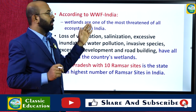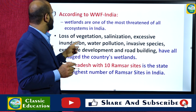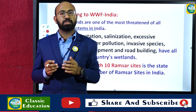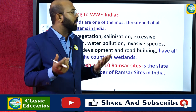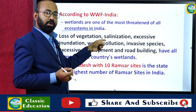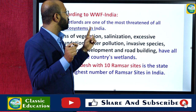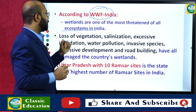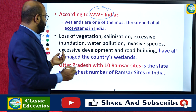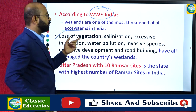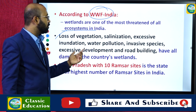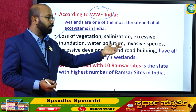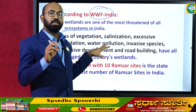According to WWF India, the wetland ecosystem is the most threatened of all ecosystems in India. The major threats to wetlands include loss of vegetation, salinization, excessive inundation, water pollution, invasive plant and animal species, excessive development, and road building.